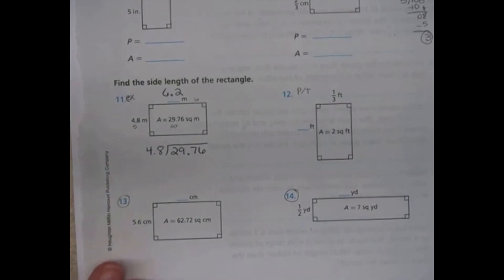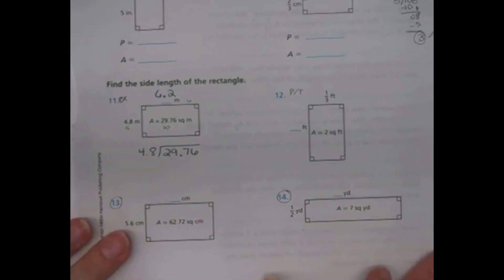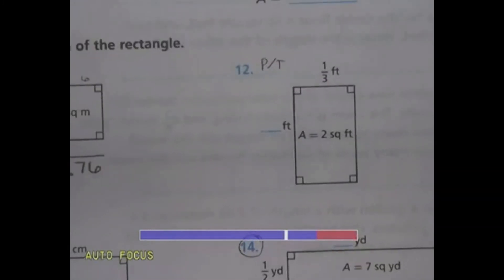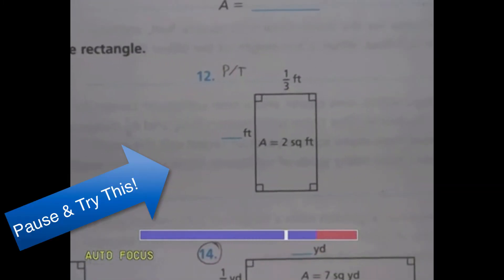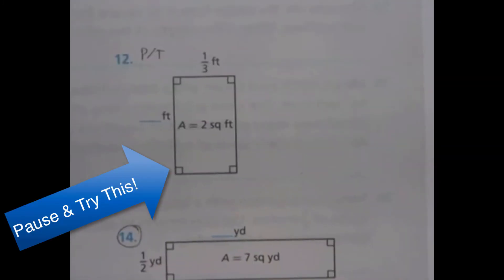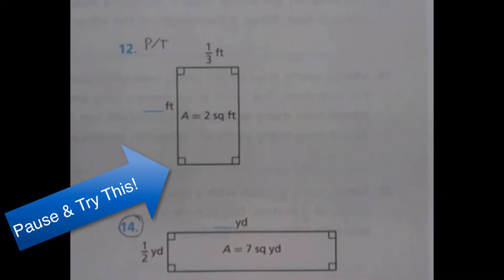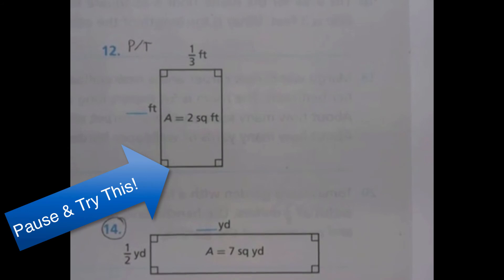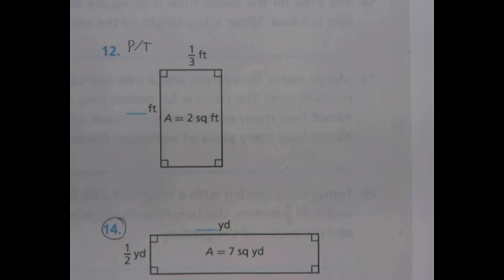The next one is a pause and try it. Take a second and try number 12. It's the same idea as what we just did, only with fractions — just remember how to divide them. There was a little trick: keep, change, flip.